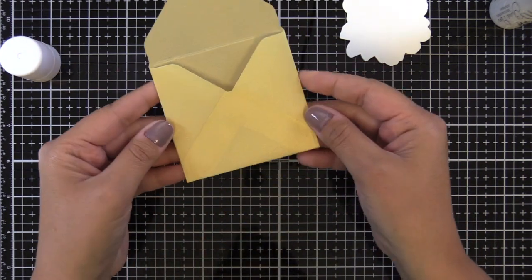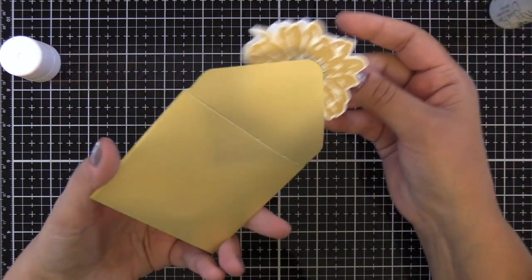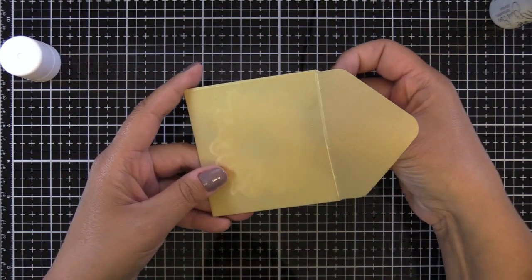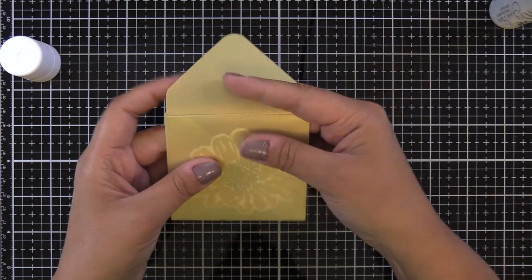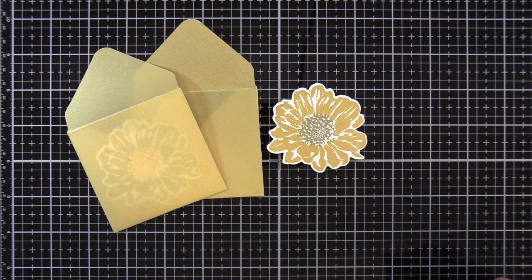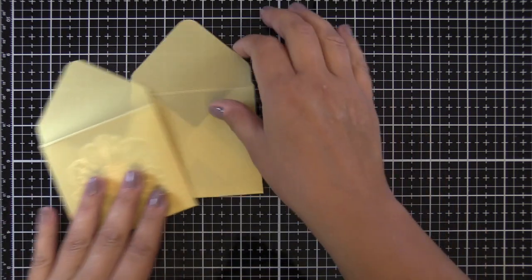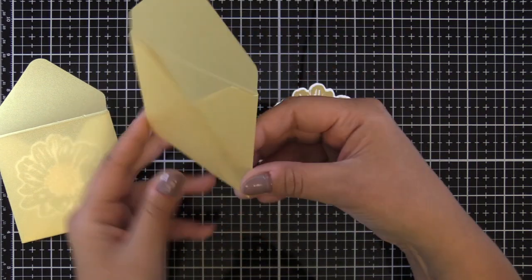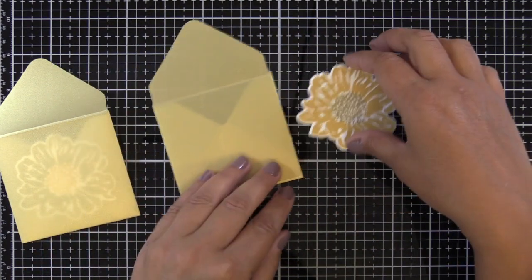Now when I go to seal the card I probably just fold the flap in because this will probably just be like a small card that goes with a gift or something like that. I'll either just fold the flap in or you could also put a dot of adhesive just on the inside of that or use a sticker or something like that to close it up.